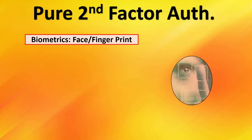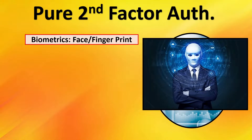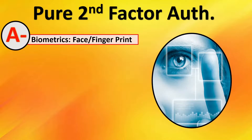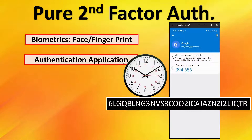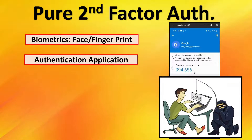Now we'll move on to pure second-factor authentication, starting with biometrics. This is one of the better methods. One concern is that people don't like having their physical attributes scanned and stored in a system, and there is potential for that data to be emulated to hack accounts. Overall, we give biometrics an A-. Next is the authentication application. These apps use a secret code given at account registration combined with universal time, hashed together to generate a one-time code good for about 30 seconds. A drawback is that a man-in-the-middle attack can occur where a malware link tricks you into entering your code on the wrong site, giving a hacker access. For that reason, we give it a B.